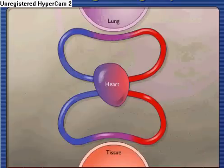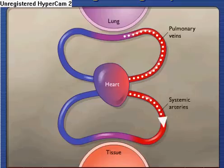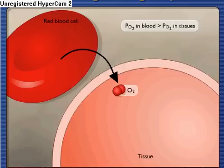Oxygen-rich blood is carried through pulmonary veins to the heart and then pumped through systemic arteries to the body. The PO2 in the blood is higher than the PO2 in the body tissues, so oxygen diffuses out from red blood cells at the body tissues.